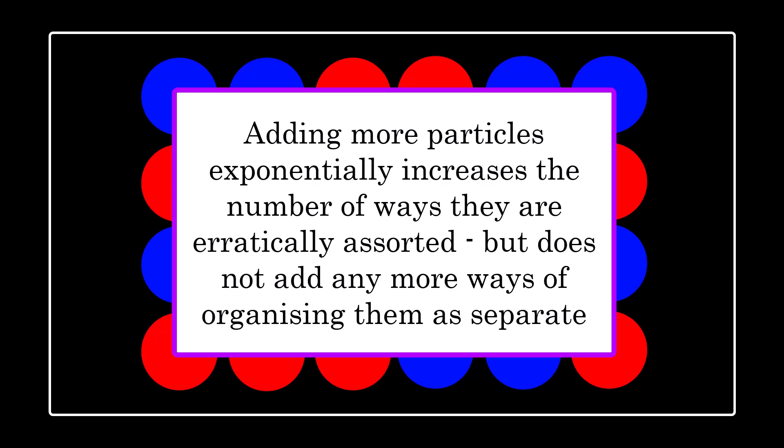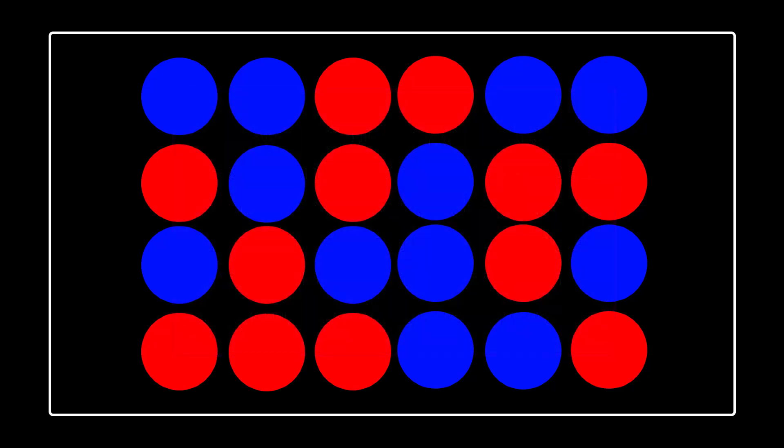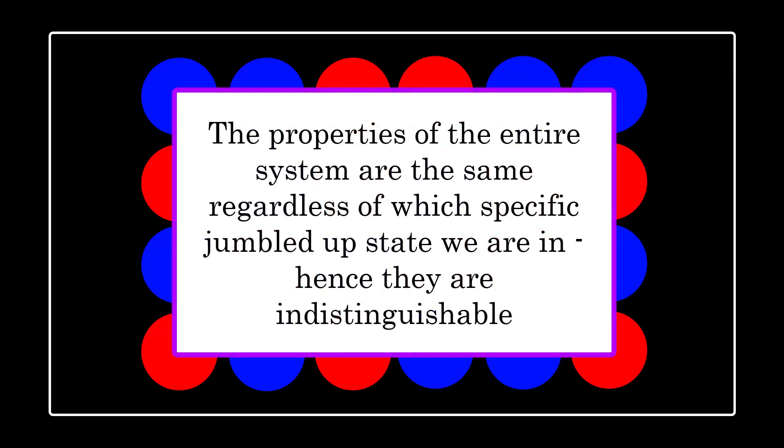All the ways we can organise the particles as a random mess are indistinguishable. For example, take a very random and mixed arrangement. If I was to swap a red and blue around, it would still look very random. In fact, the two states of the system are essentially the same — the overall properties of the system are the same, so the two states are indistinguishable. Adding more particles adds exponentially to the number of indistinguishable states, but doesn't significantly add to the number of clearly identifiable separate states. There's one way to separate all these particles into their respective colours, but many more ways where they look like a random mess.